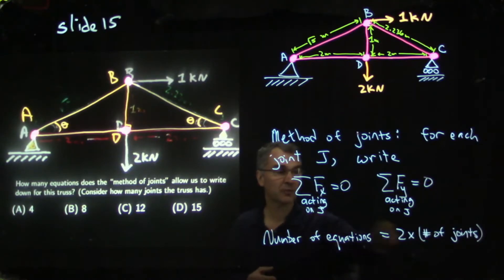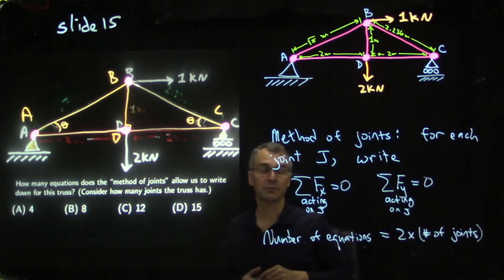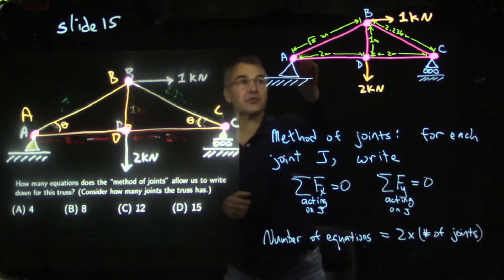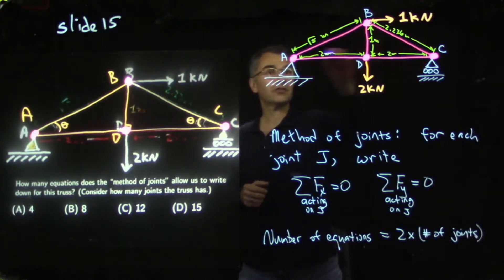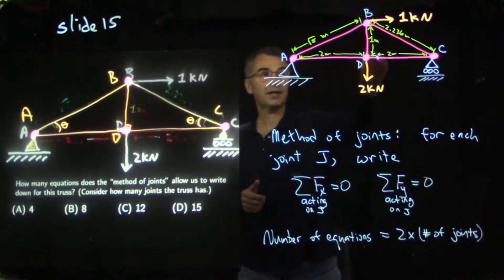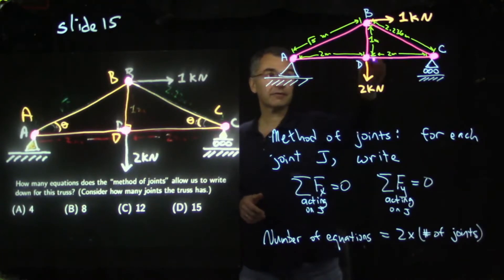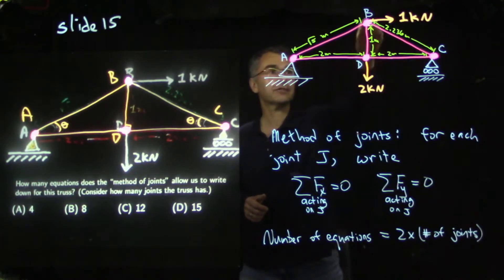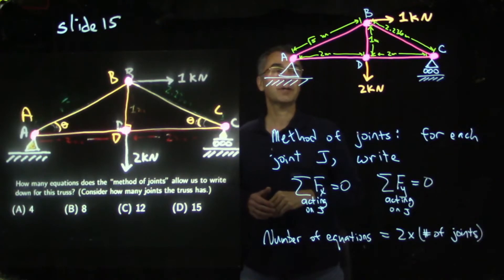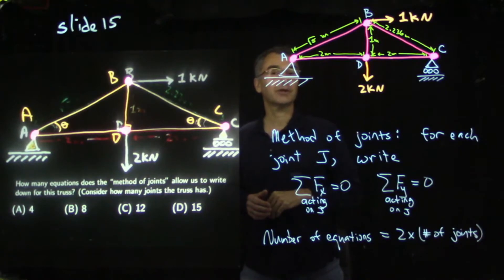If you have some number of joints, then you get two times that number of joints for the number of equations you can write down. We are saying that if this truss as a whole is in equilibrium — not accelerating, not accelerating rotationally — then every joint of the truss is also in equilibrium. Because all forces acting at a given joint pass through that joint, there is no new information from a torque equation. So we only get two equations per joint.